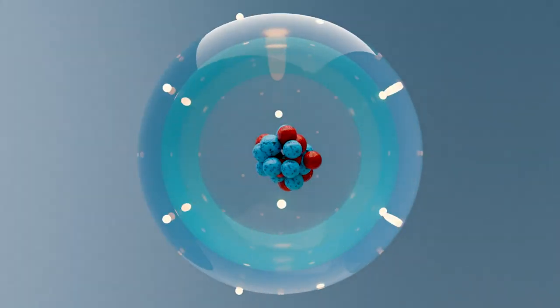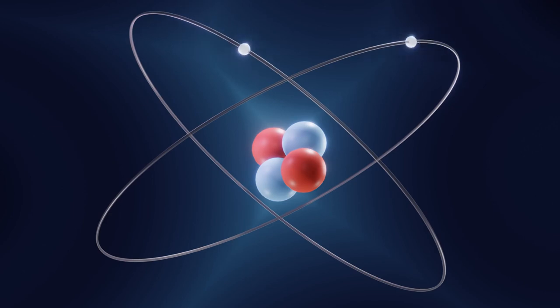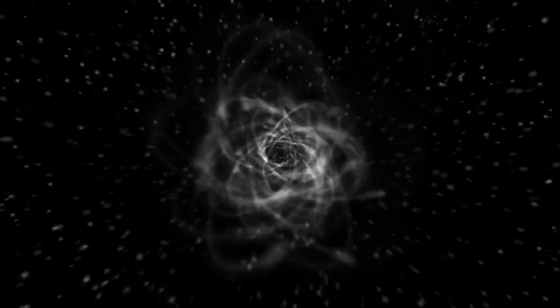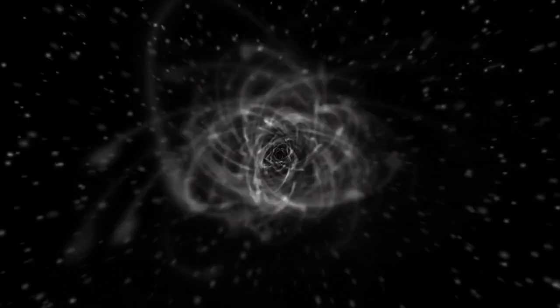At the heart of magnetism are tiny particles called electrons. Electrons are found in atoms, and they have a property called spin, which creates a small magnetic field.